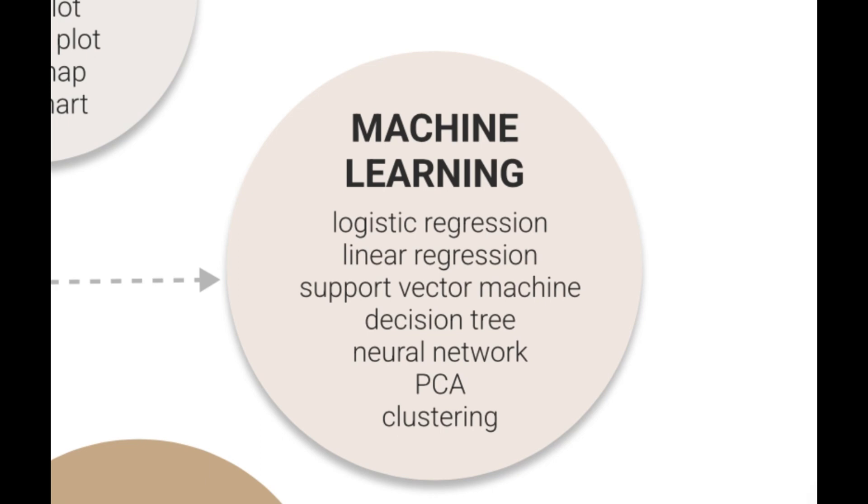Generally, machine learning algorithms are categorized into supervised learning and unsupervised learning. Some popular algorithms to start with are logistic regression, linear regression, support vector machine, decision tree, neural network, PCA and clustering. I have created practical guides for some machine learning algorithms. If you are interested, check out the link in the description.